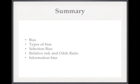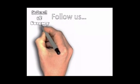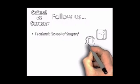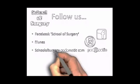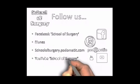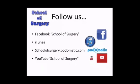So we've had a brief overview of bias. We started by defining what it is, talked about the many different types, then looked at two particular types: selection bias and information bias. Along the way we introduced the concepts of relative risk and odds ratio as well. Thank you for listening to another podcast brought to you by School of Surgery. You can follow us on Facebook at School of Surgery, on iTunes, on Podomatic at schoolofsurgery.podomatic.com, and by searching School of Surgery on YouTube. Thank you very much and see you next time.